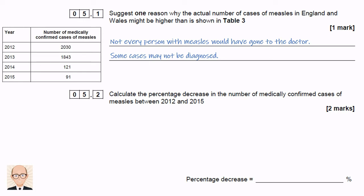Next we're asked to calculate the percentage decrease in the number of measles cases between 2012 and 2015. This is a common type of question. Calculating a percentage increase or decrease is just a percentage change — it's another way of showing the difference between one value and another as a percentage of the original value.